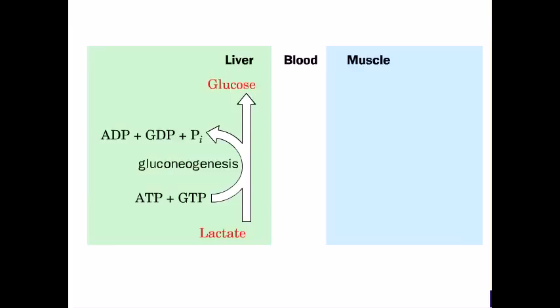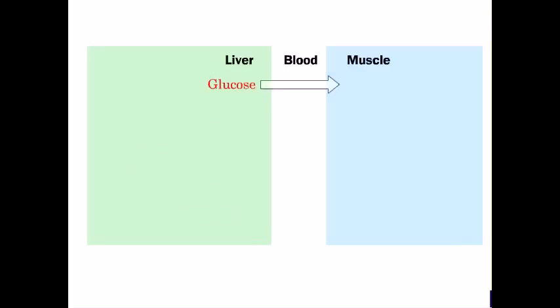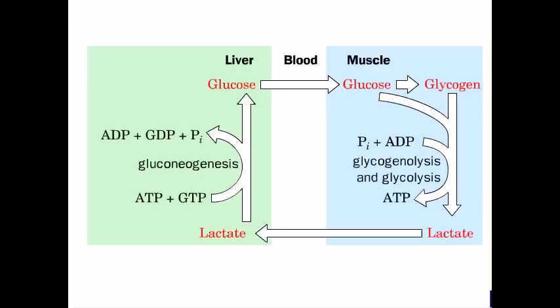Gluconeogenesis requires the hydrolysis of ATP and GTP. Glucose produced in the liver is transported through the bloodstream to the muscle tissues again, where it can be used or stored as glycogen. This is called the Cori cycle.